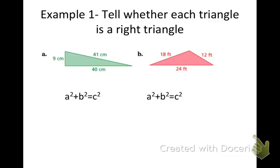Here we have two examples: example A and example B, and you're going to tell me whether each triangle is a right triangle. Take a minute, copy down both triangles, but leave plenty of room to write down your answers. And then I've written down the formula, the Pythagorean Theorem, a squared plus b squared equals c squared. I'm going to show you how to use that to find out if these are right triangles.